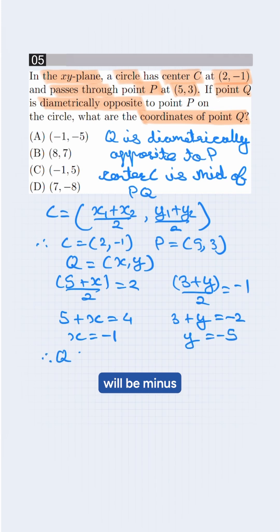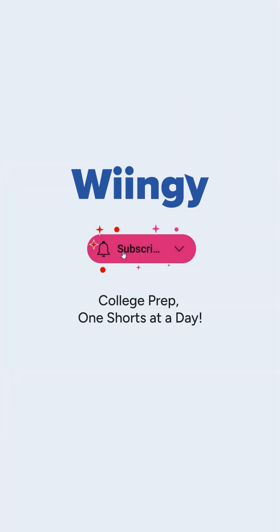Therefore Q will be minus 1 and minus 5. This is our answer. So correct option will be A. Want more SAT math solved? Hit subscribe.